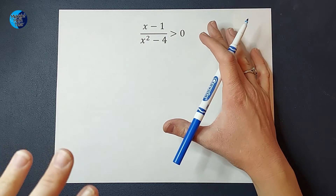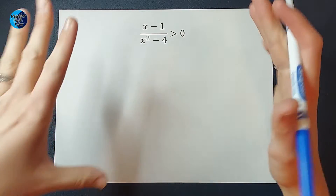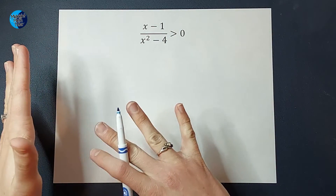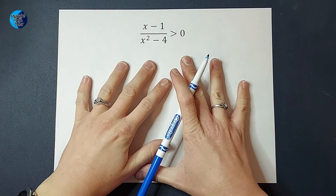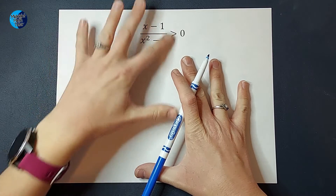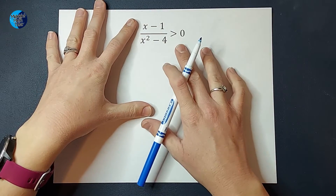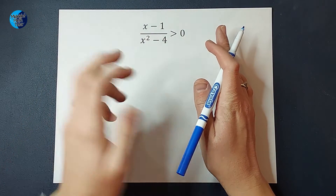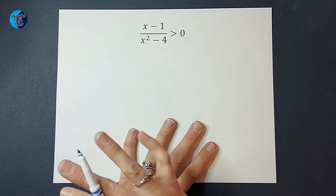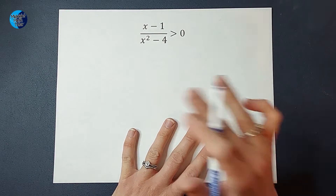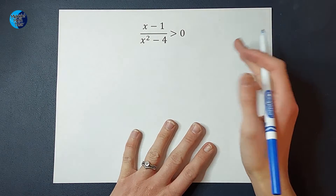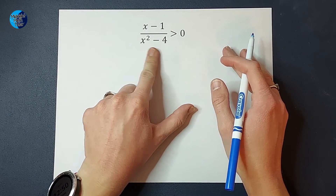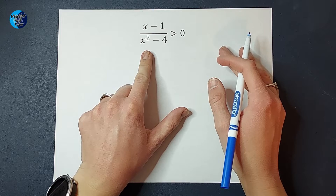The first thing I want to do is get everything on one side of my inequality, with zero on the other. We're good here — we're already set up that way. The next thing I want to do is factor if I need to. My denominator here can be factored.